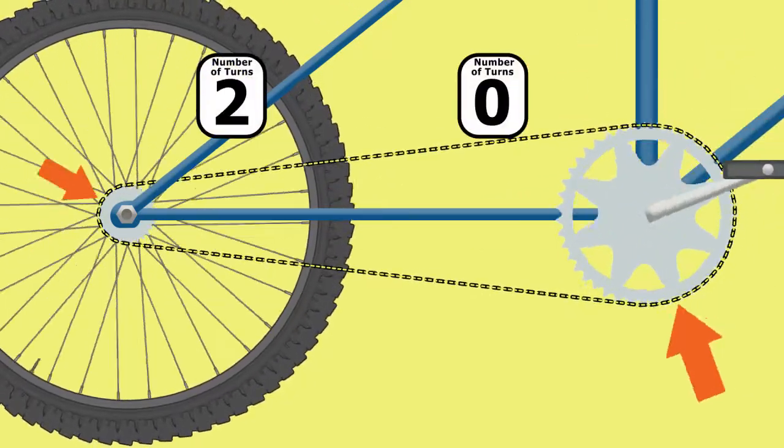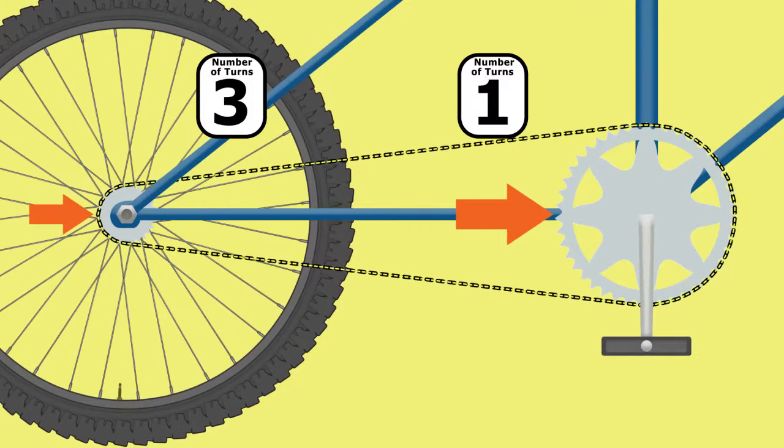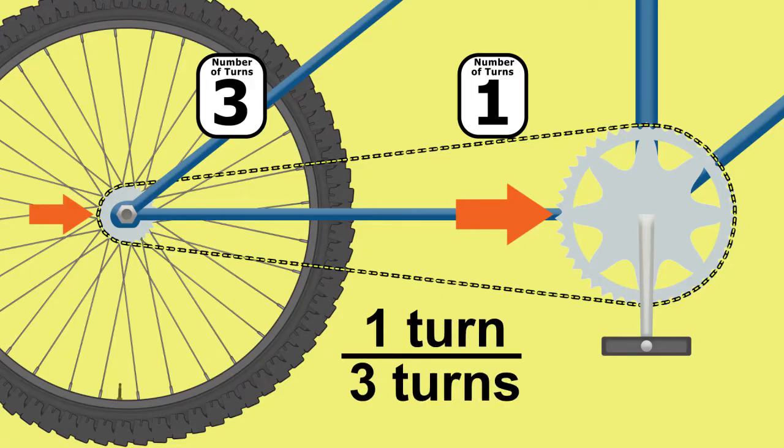For every one turn of the larger gear, near the pedal, the smaller gear, near the back wheel, turns three times. This means that the ratio is one turn to three turns. Both the numerator and the denominator in this ratio describe the number of turns.